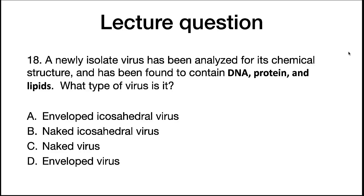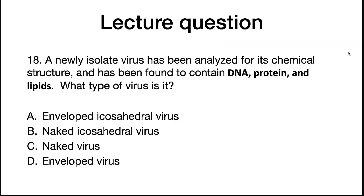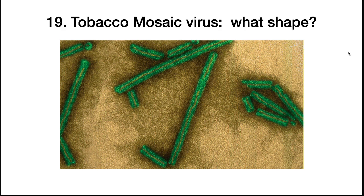Let's test your comprehension so far. A newly isolated virus has been analyzed for its chemical structure and found to contain DNA, protein, and lipids. What type of virus is it? The tobacco mosaic virus shape is also shown — what shape is it? The first virus must be an envelope virus because it has a lipid membrane; lipids are only found in membranes, so D is the correct answer. The tobacco mosaic virus is a rod-shaped virus.